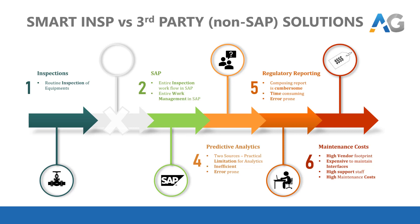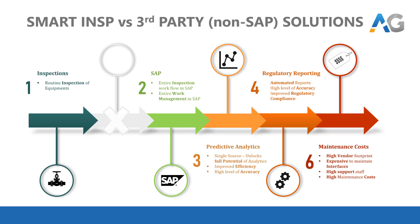Let me explain it a bit further, starting with predictive analytics and reporting. One system, single dataset — that means it unlocks the full potential of reporting and analytics. No more dependencies on multiple system protocols. This improves efficiency as well as accuracy. The same goes for regulatory reporting: no more manual intervention as reporting can be automated, leading to improved accuracy and regulatory compliance. And finally, low vendor footprint and fewer technical dependencies leads to lower support staff and cost savings.